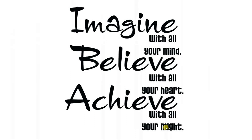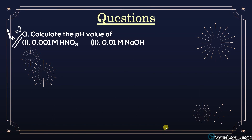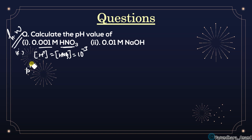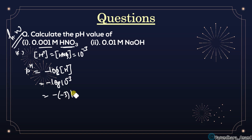There was a homework in the last video: calculate the pH value of 0.001 M HNO₃. For the first part, since it is a strong acid, H⁺ concentration equals HNO₃ concentration, which is 10⁻³. So pH = -log[H⁺] = -log(10⁻³) = -(-3)log10 = 3. The pH value is 3.